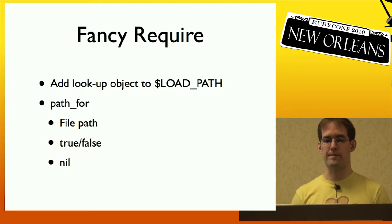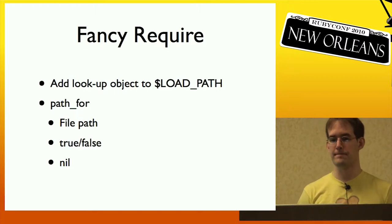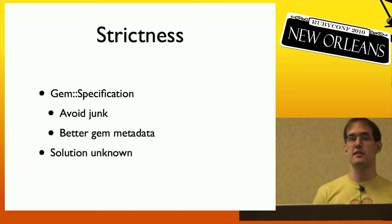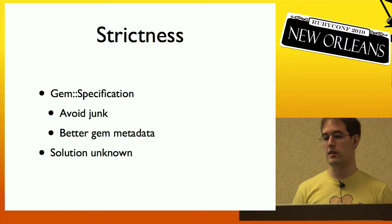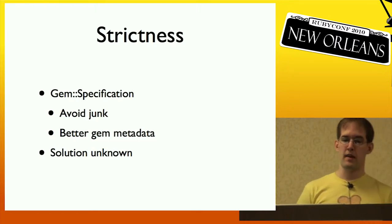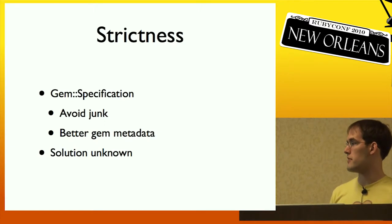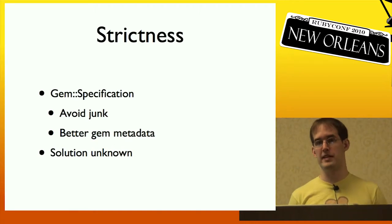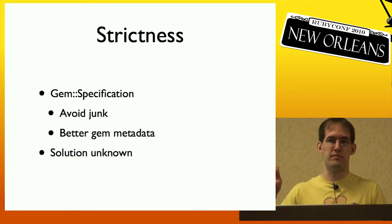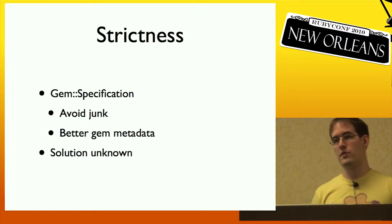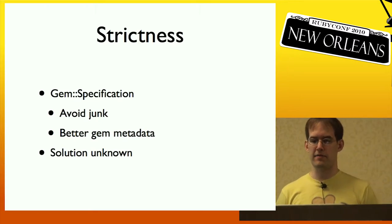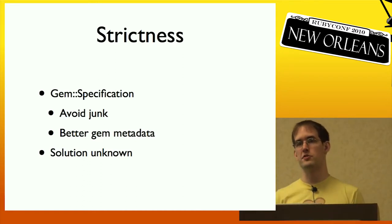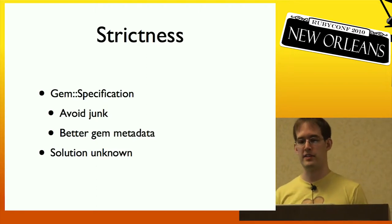This would reduce the memory footprint in Ruby 1.9. I'd also like the gem spec to be more strict about what it allows. Basically, there's a lot of junk in the gem specs. Over time, because it's a Ruby format, you can pretty much add almost anything in Ruby to the gem spec, and previously RubyGems just didn't care. So it would be nice to have some better, cleaner metadata. Unfortunately I don't know what the solution is, because it's hard to say you can't add that while still supporting old gems that had stuff I'd like to avoid.